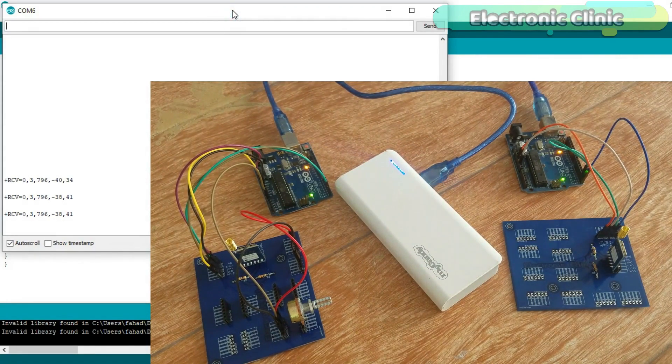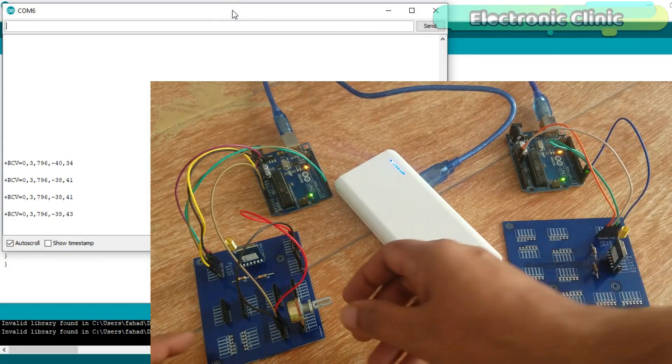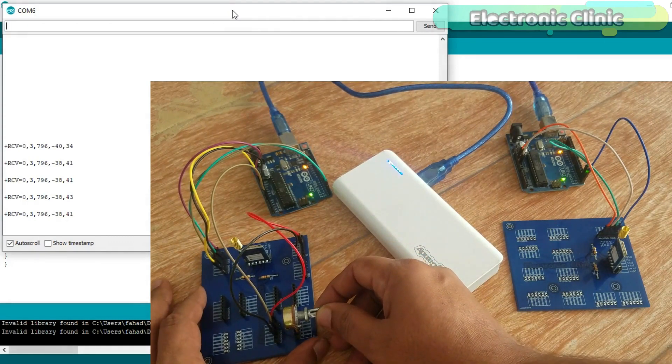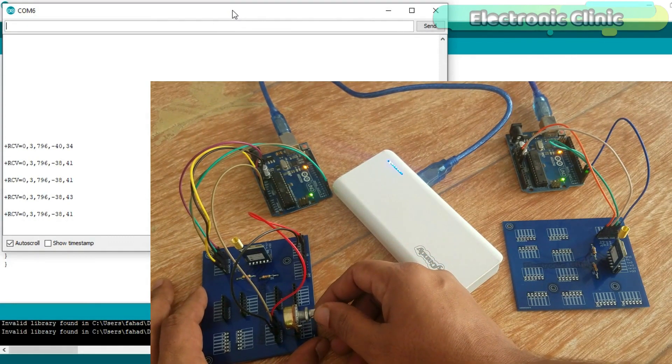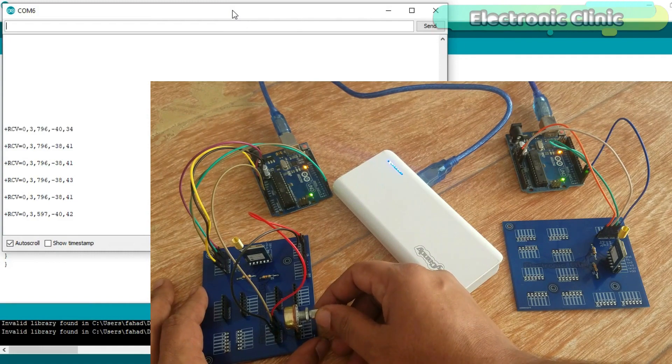As you can see now I can receive the sensor value wirelessly. You will see a change in the value as I rotate the knob of the variable resistor. This variable resistor can be replaced with any sensor which you want to monitor.